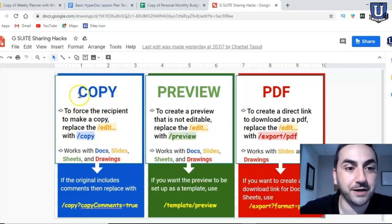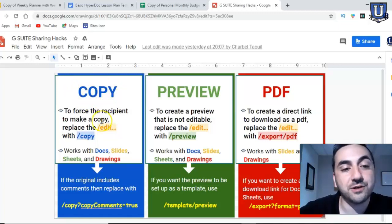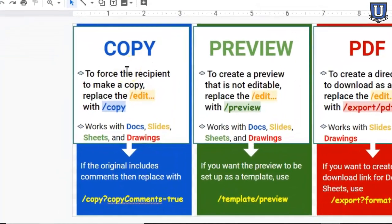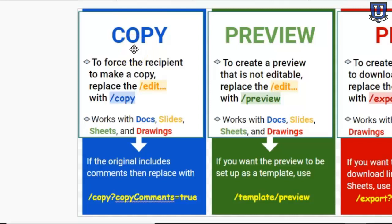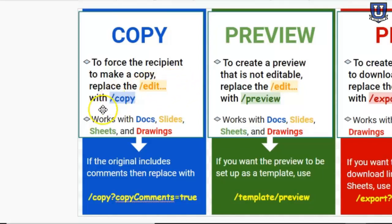Starting with the 'copy' hack — if we want to force our recipients, like students for example, to make a copy of a file. Oftentimes we just trust or hope they will make a copy. This is one way to ensure that they have to. At the end of the share link it ends with '/edit' and some other stuff — we're going to replace that with '/copy'. This works in Google Docs, Slides, Sheets, and Drawings.